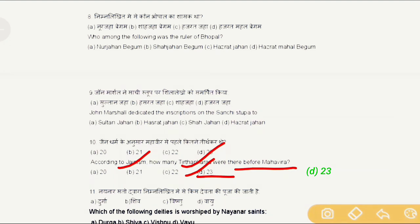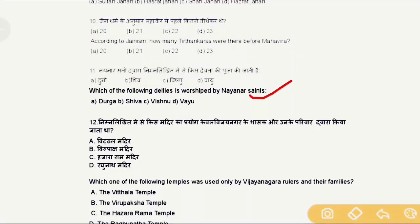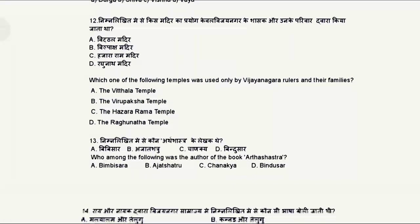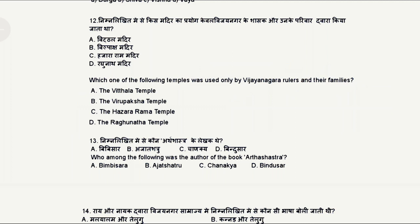Question 11: Which of the following deities is worshipped by the Nayanars? The correct answer is option B, Lord Shiva. Question 12: Which one of the following temples was used only by the Vijayanagara rulers and their family? The correct answer is option C, the Hazara Rama Temple.